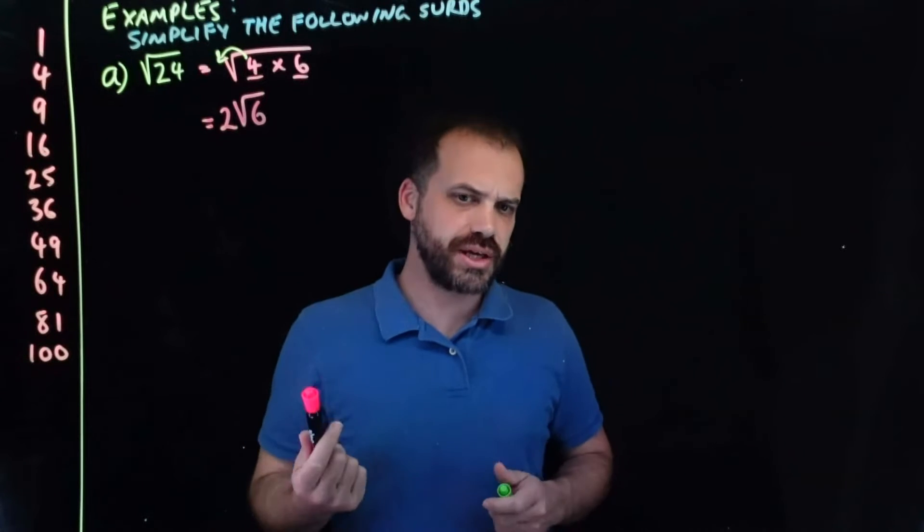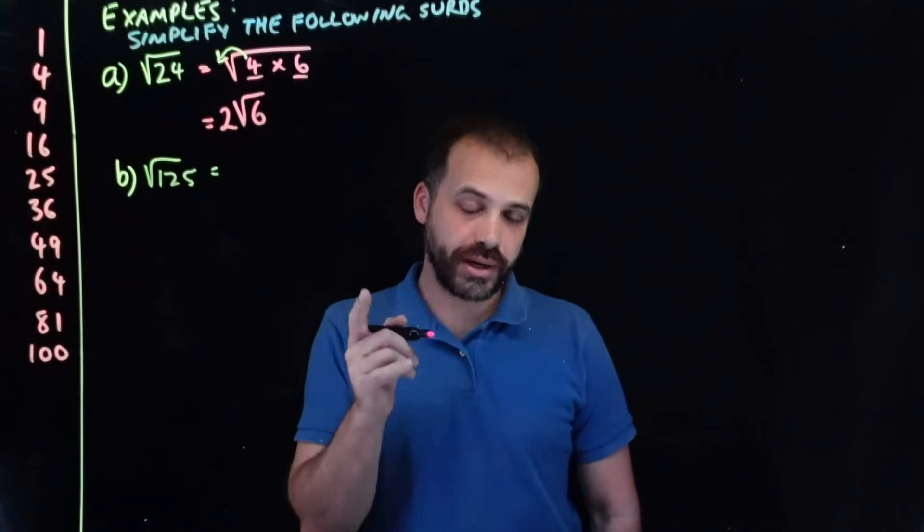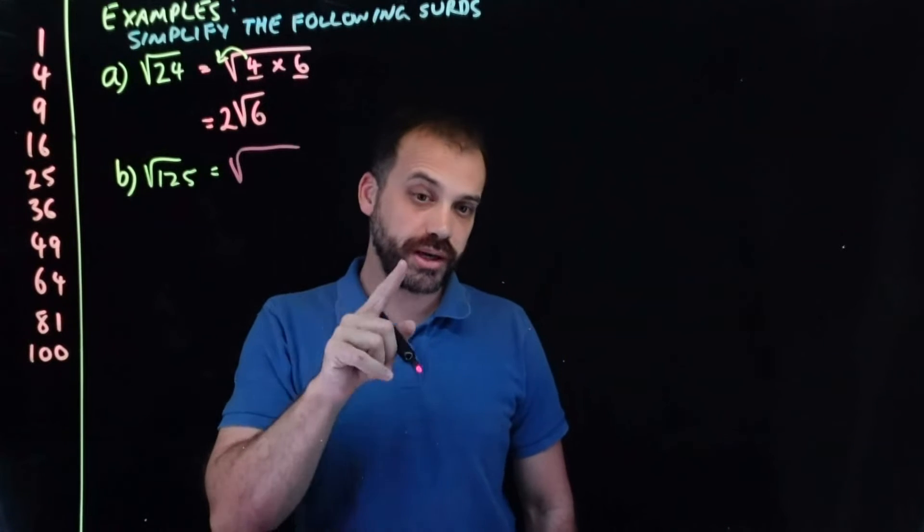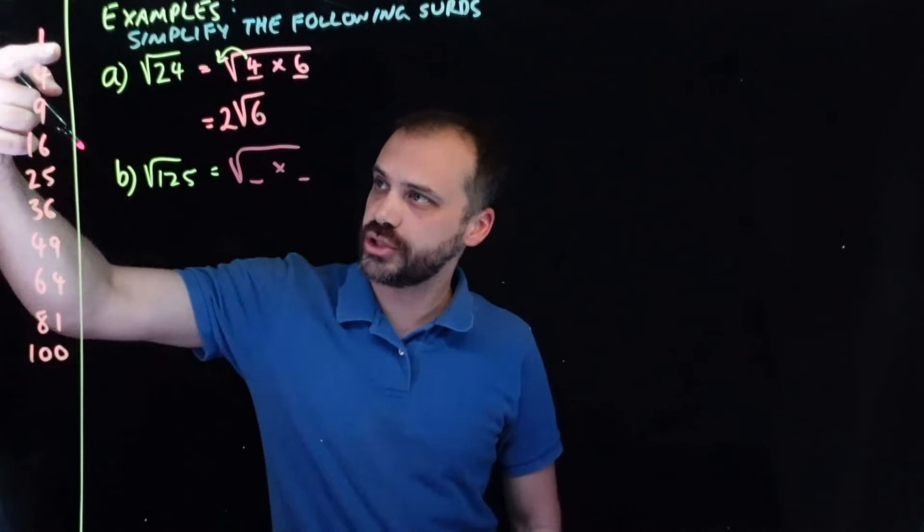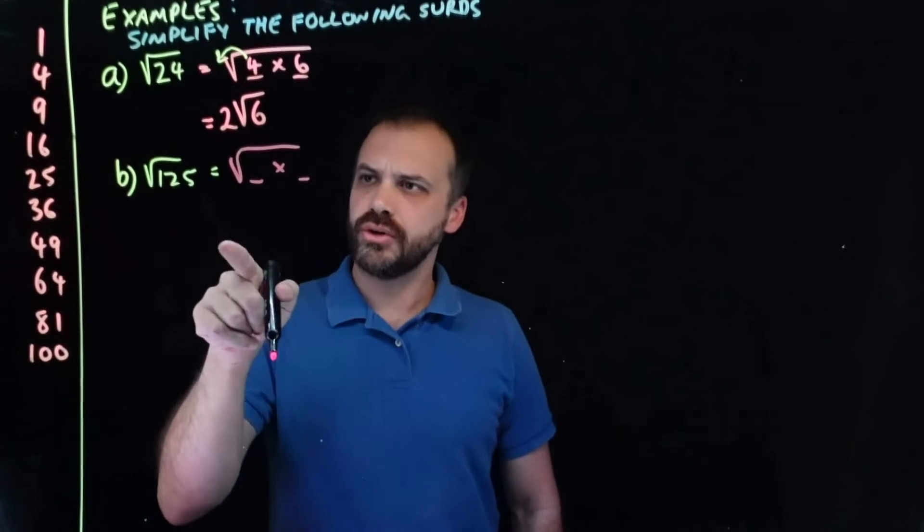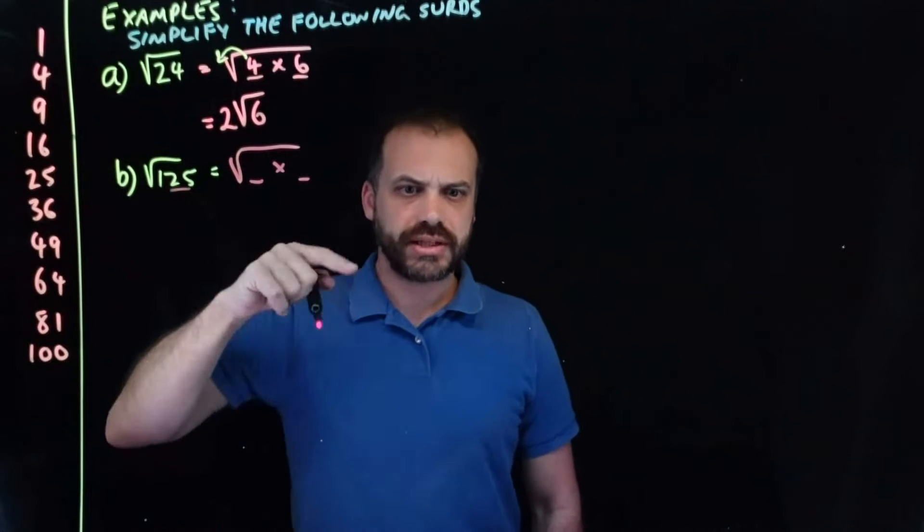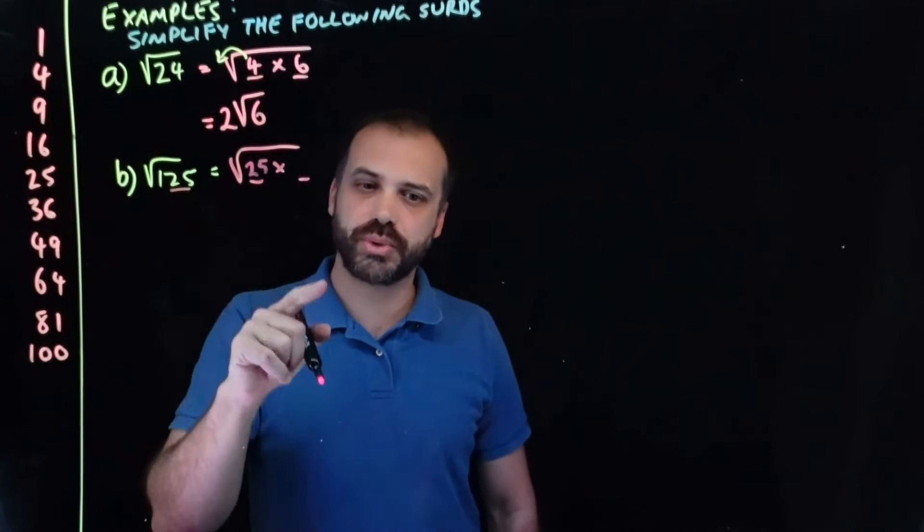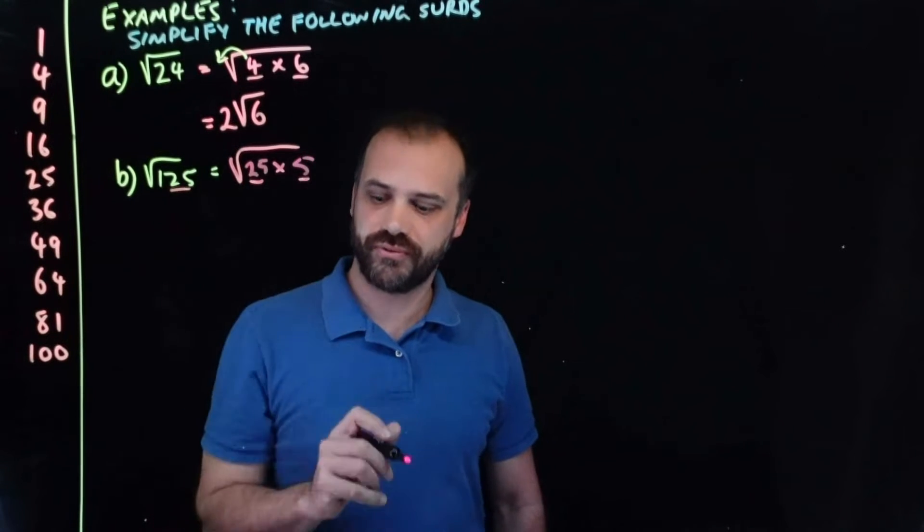I'm going to do a couple more examples, and then I'm going to start explaining why this is working. Simplify the square root of 125. If we want to do that, we need to break the number 125 into two numbers, one of which is a square number. Oh, look, it ends in 25. So, that's going to be 25. 25 times, and 25 times what makes 125? 25 times 5.